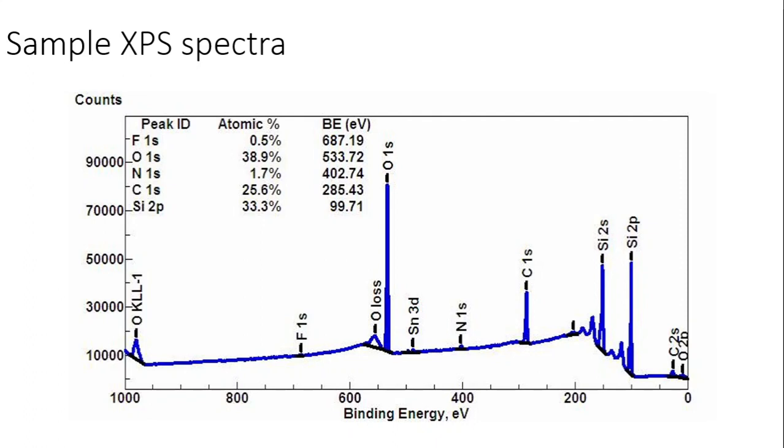This is because electrons are emitted through inelastic collisions. The mean free path of these electrons is less than two nanometers, so the photoelectrons emitted from the sample come from about five to ten nanometers from the top surface.